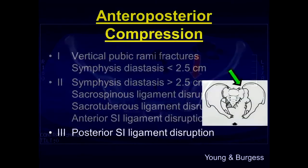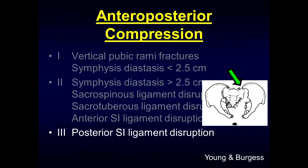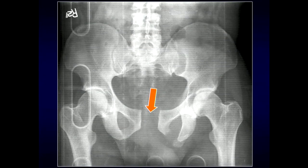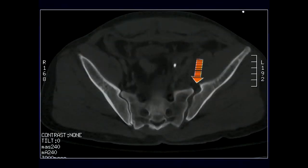AP compression type 3, in addition to the prior injuries, you're going to get posterior SI joint ligament disruption. In this individual you can see marked widening of the pubic symphysis, the rami fractures, as well as widening of that left sacroiliac joint. On CT, we see the anterior widening as well as the posterior widening compared to the contralateral side.